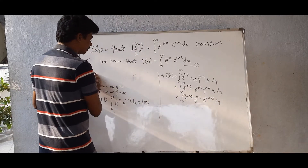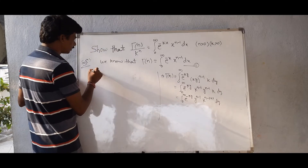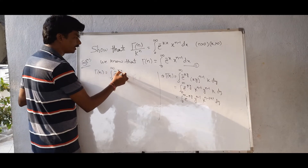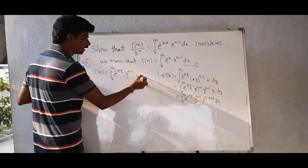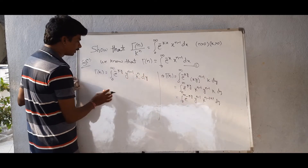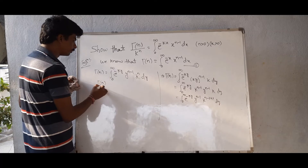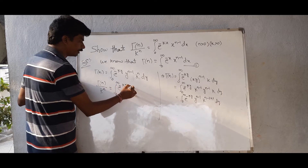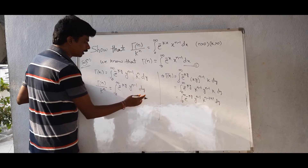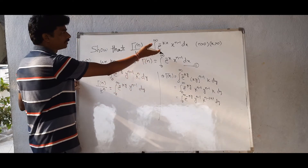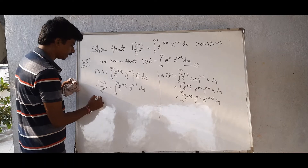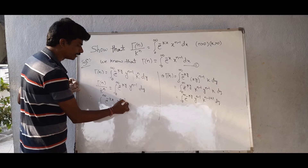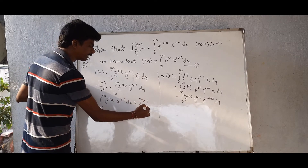The n minus 1 plus 1 terms cancel, giving gamma of n equals integral from 0 to infinity of e power minus ky, y to the power of n minus 1, k power n, dy. Taking k power n to the left side: gamma of n by k power n equals integral from 0 to infinity of e power minus ky, y to the power of n minus 1, dy. Now replacing y with x, we get the result.